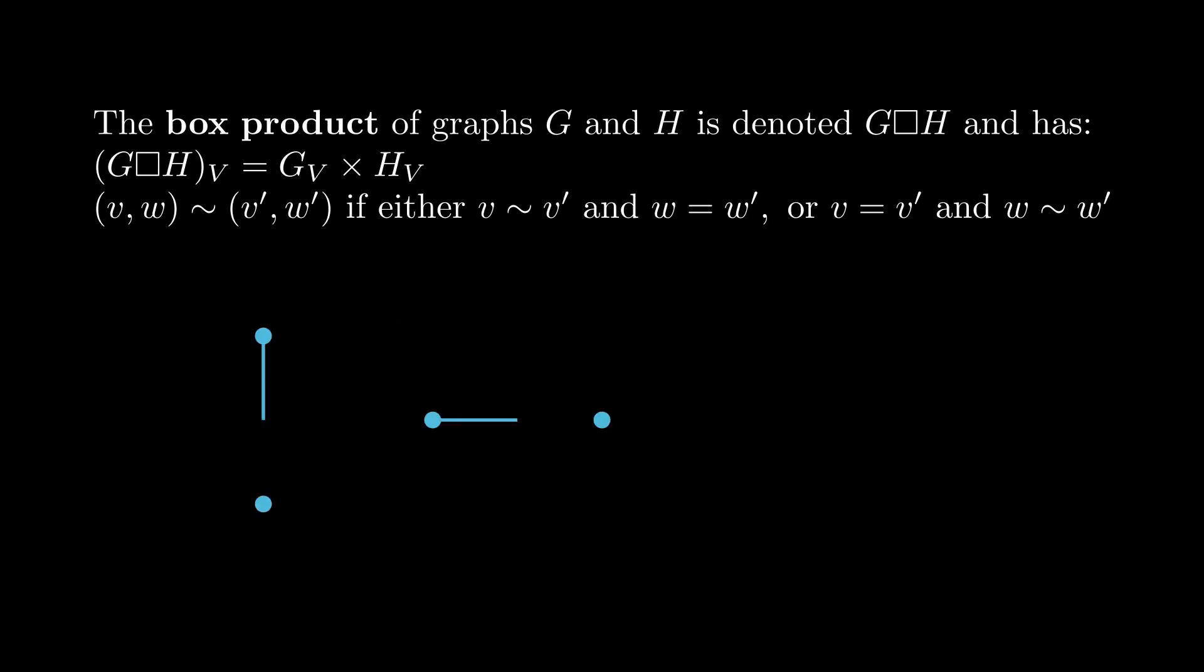So suppose we want to box I1 with itself. Well, the first step is to take the Cartesian product of the vertex sets, and that gives us four vertices. And then we can fix the second coordinate to be equal. So this is the W equals W prime condition of the definition, and this gives us two edges here. And then we can fix the first coordinate to be equal. So that's the V equals V prime condition, and we get two edges here. And this is why it's called the box product. As you can see, when you box I1 with itself, it kind of gives a box.